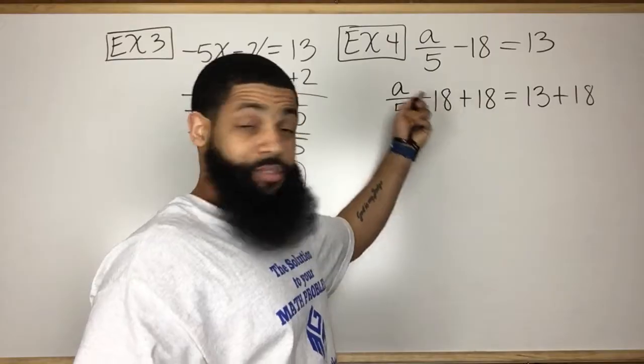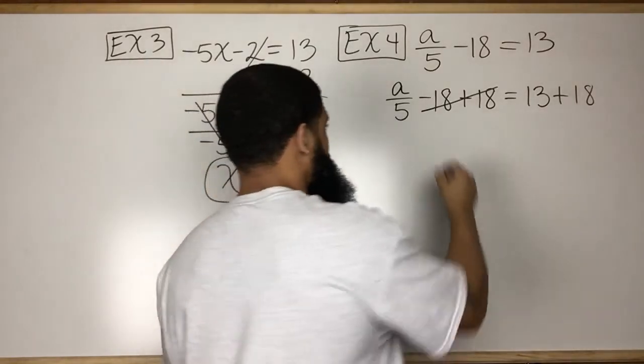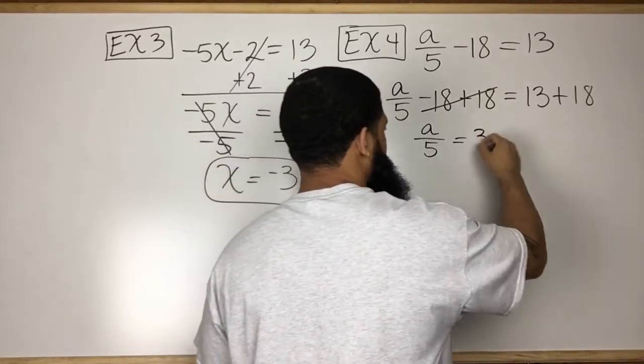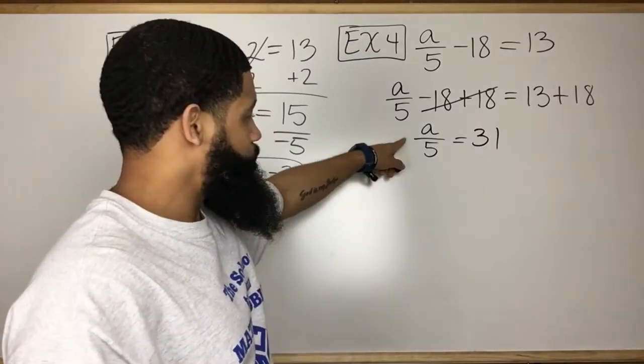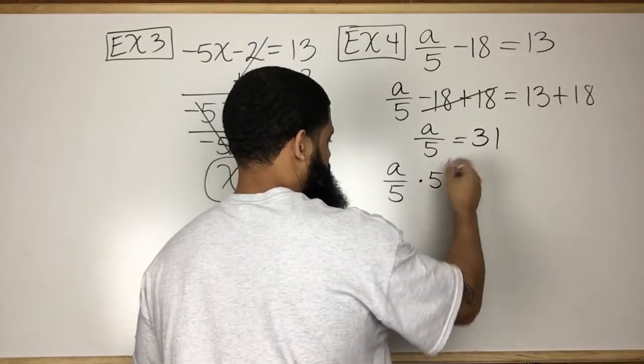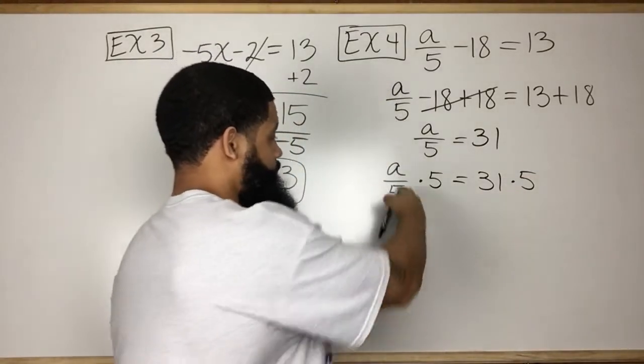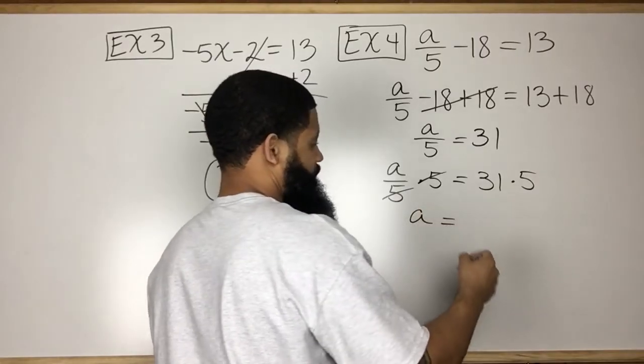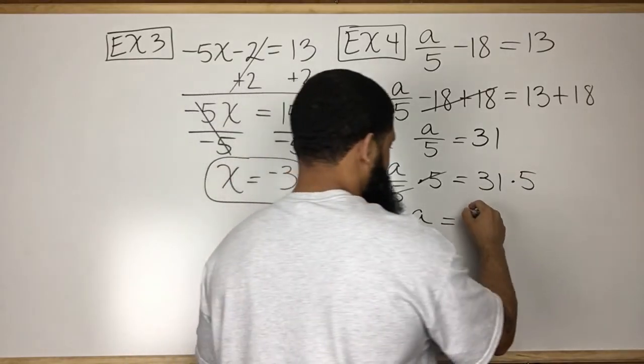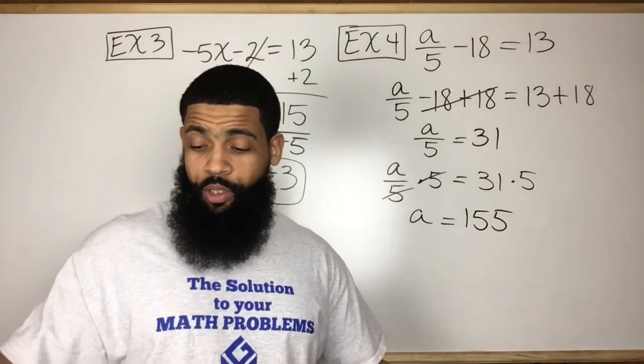Now, if you have some number and you subtract 18, then add 18, that adds up to 0. So, we have A over 5 equals 18 plus 13 is 31. Here, the opposite of dividing by 5, so we're going to multiply by 5. So, then we have those cancel each other out. And then 5 times 30 is 150, 1 times 5 is 5, so 155. That's our answer. A equals 155. We can always plug it back in.